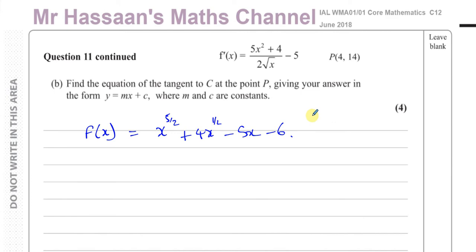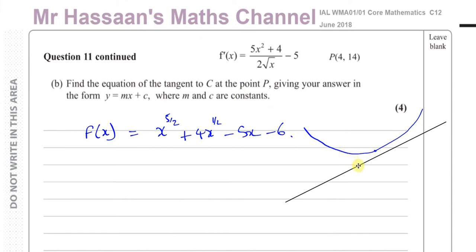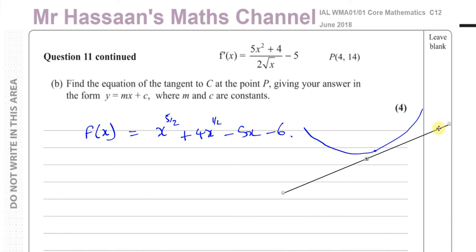For part b: find the equation of the tangent to C at the point P, giving your answer in the form y equals mx plus c. We know this is the gradient function and P is (4, 14). The tangent to a curve is a straight line which touches the curve at that point without cutting through it. The tangent has exactly the same gradient as the curve at the point where it touches.